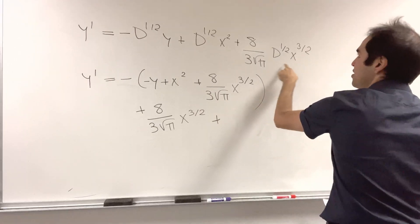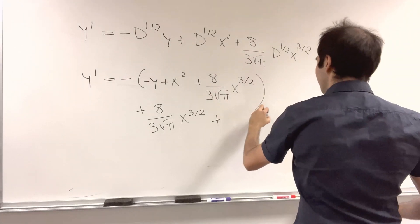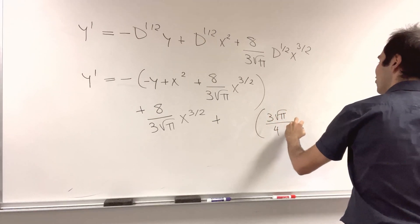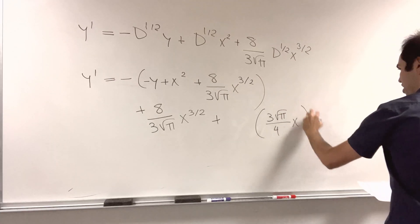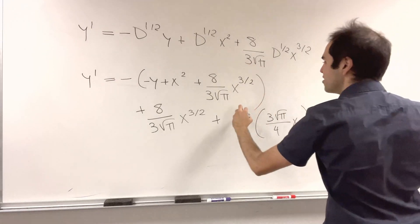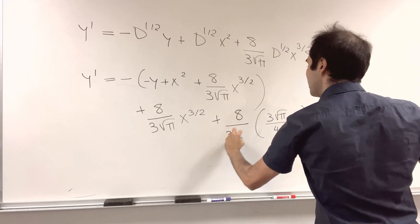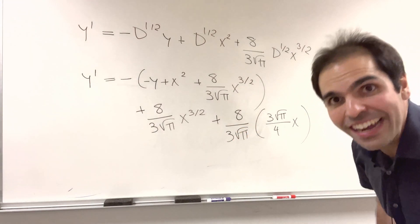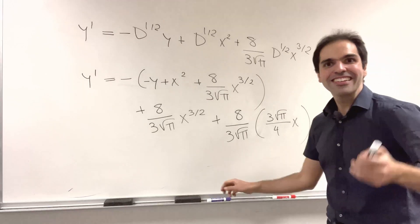the half derivative of x to the 3/2, we calculated it to be 3√π over 4 x to the 1. But we also have this factor, 8 over 3√π. And now comes a huge cancellation party to which you're invited.